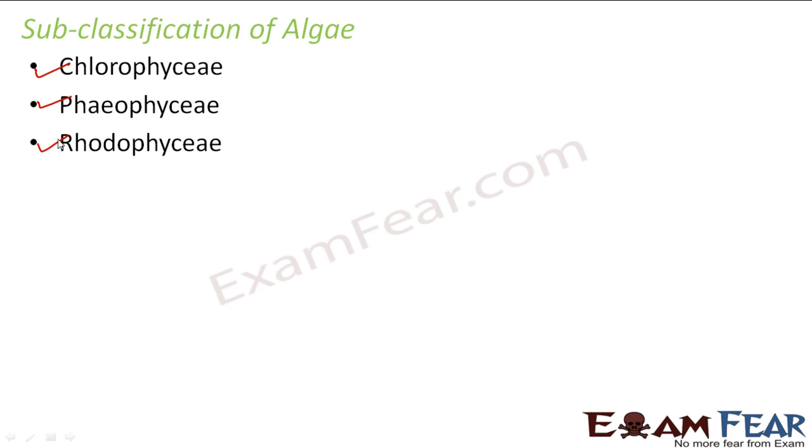The basis of this classification is the color of the algae, which differs because of their chemical composition — specifically the pigments present in them. Different pigments give different colors. Before discussing the three types of algae, let us quickly talk about photosynthetic pigments, since the presence or absence of these pigments is one of the most primary factors for the subclassification of algae.